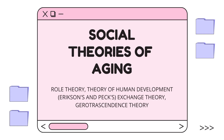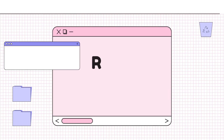Hi everyone, today we are going to talk about four types of social theories of aging: role theory, theory of human development, exchange theory, and gerotranscendence theory.